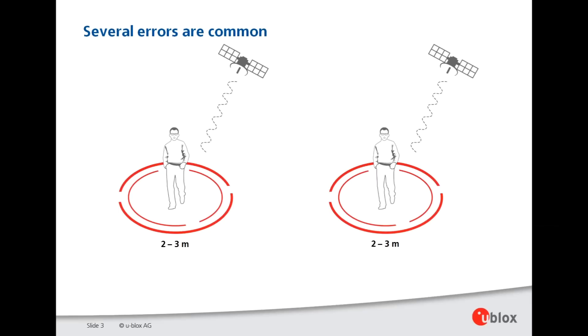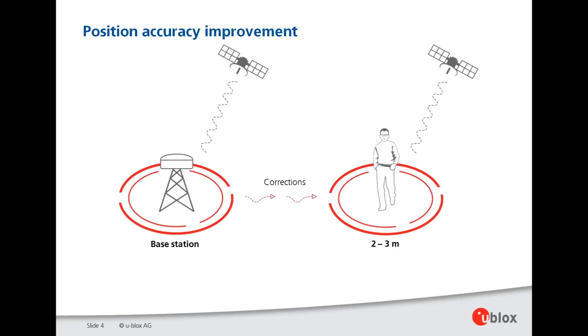This is certainly true for errors originating from the GNSS system itself - that would be clock errors and orbit errors - but it's also true if we assume these two users are close to each other that errors originating from the atmosphere are going to be the same, and we can use this fact in a differential setup.